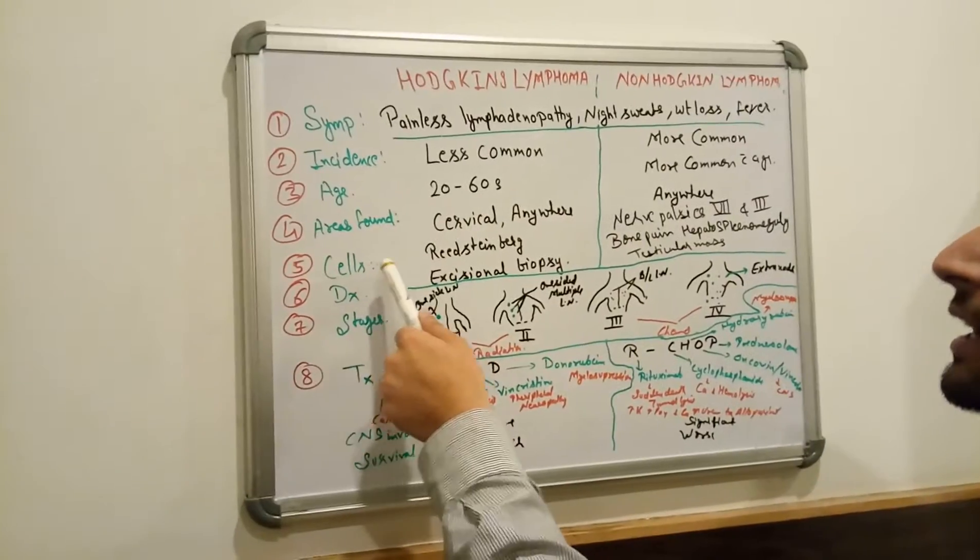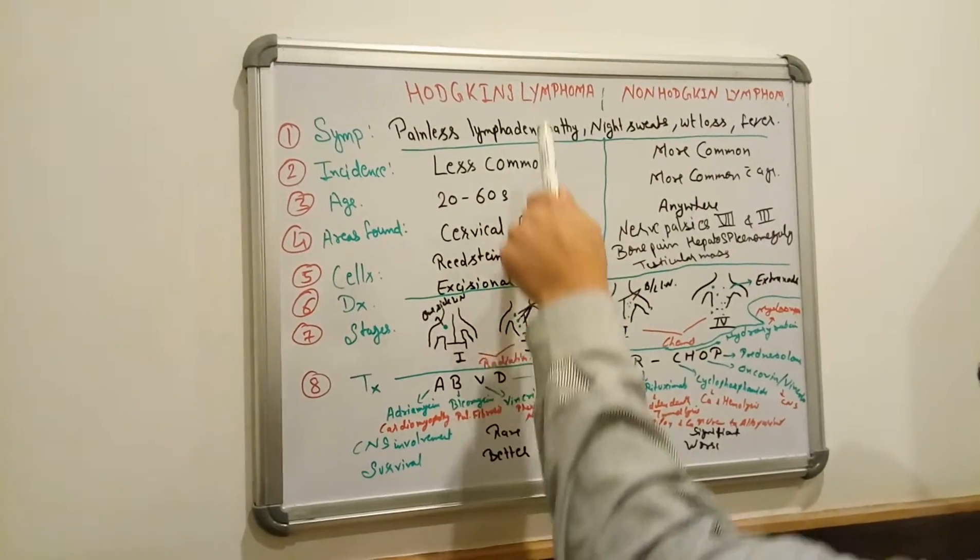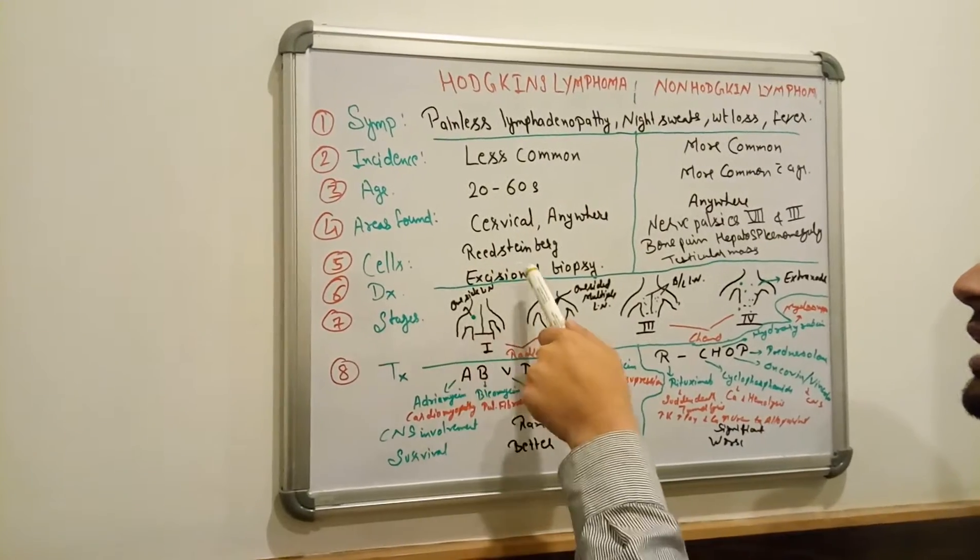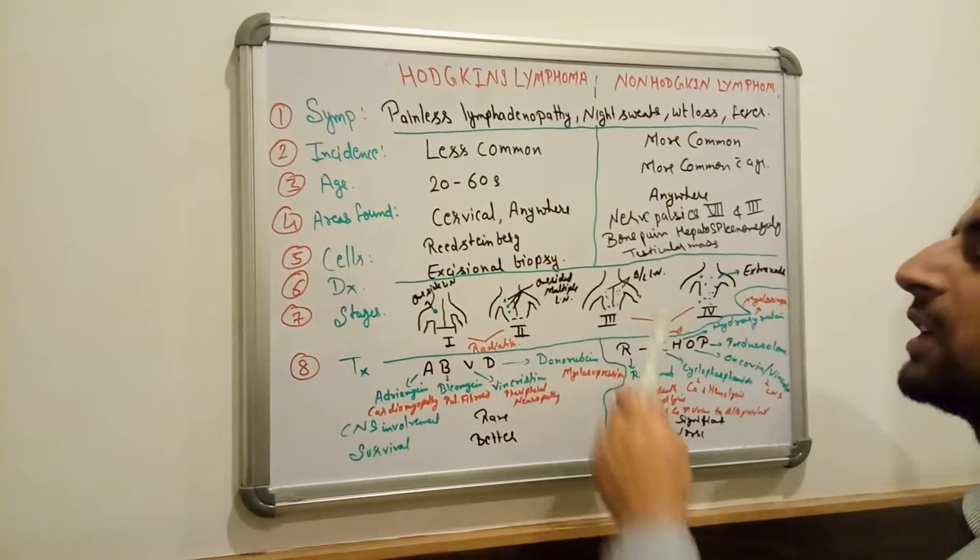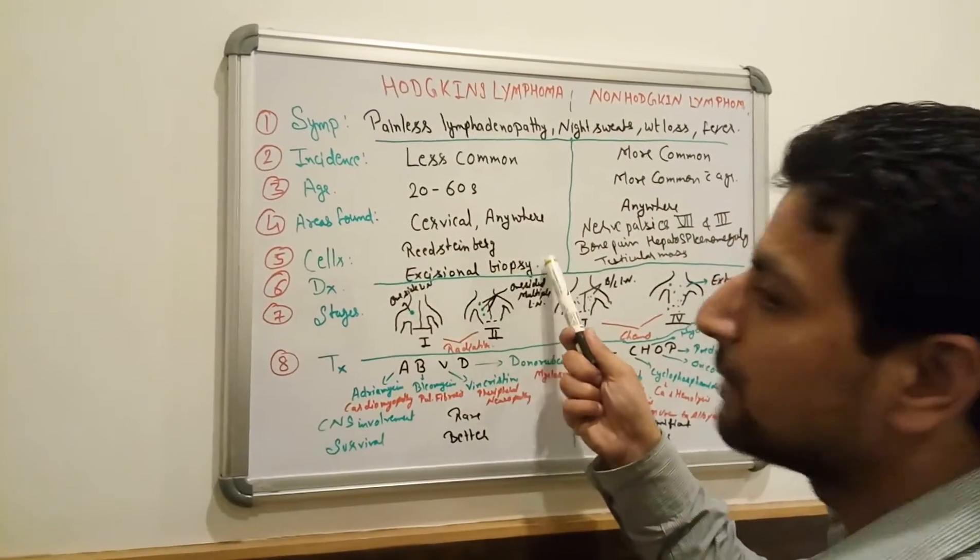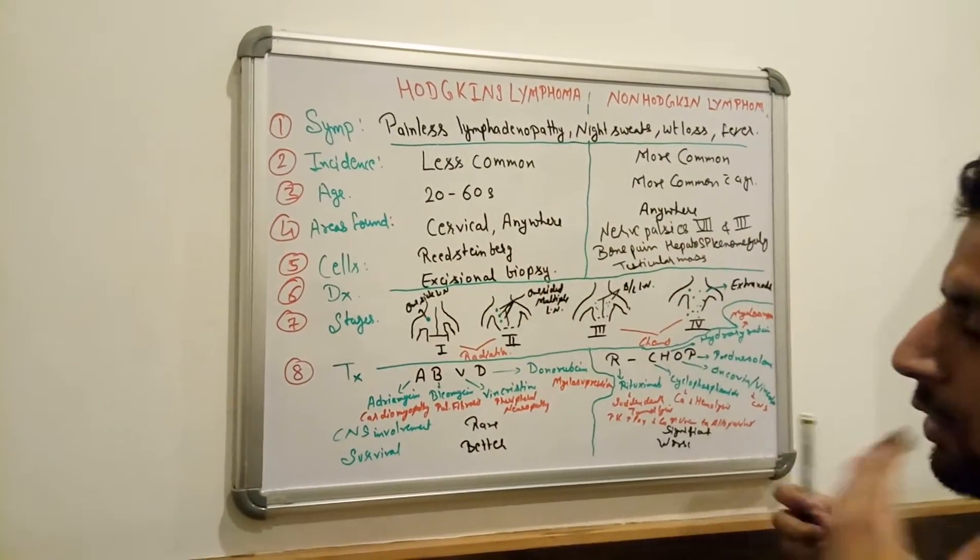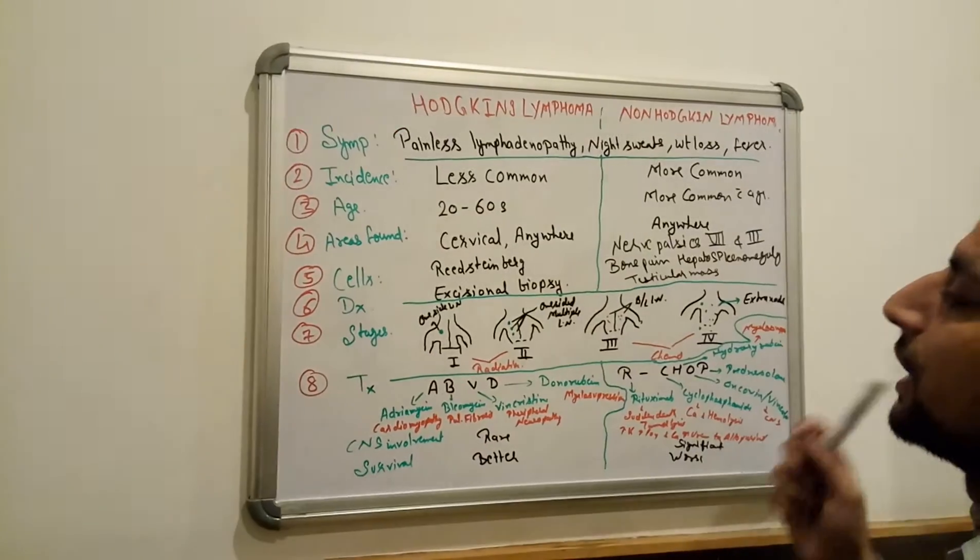But here we see the Reed-Sternberg cell in Hodgkin lymphoma but in non-Hodgkin no Reed-Sternberg cell. Here the diagnosis is excisional biopsy. Excisional biopsy means we took whole lymph node, not only the needle biopsy.